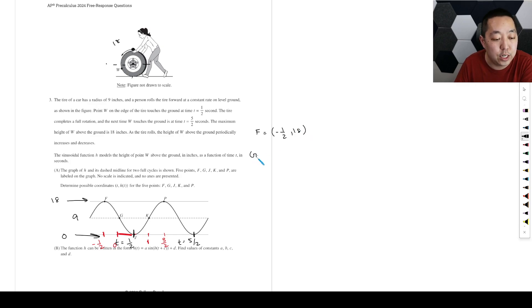So my initial take, okay, for point F is I'm going to say it's the coordinate negative one half and the height is 18. Okay. For G, I'm going to say it's time zero and a height of nine. And then for K, I'm going to say it's one and nine. And then for J is going to be one half and zero. And then P is going to be three halves and 18.